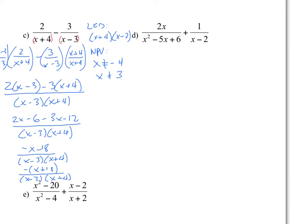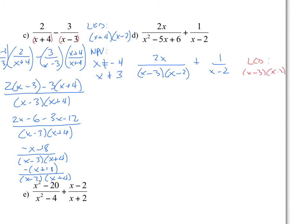Number two: we need to factor the denominator before finding the LCD. Writing this out: 2x over x minus 3 times x minus 2 — which is the factored trinomial — plus 1 over x minus 2. The lowest common denominator is x minus 3 times x minus 2. Notice that the first fraction already contains both factors of the LCD, so we do not need to multiply it by anything. The second fraction needs to be multiplied by x minus 3.